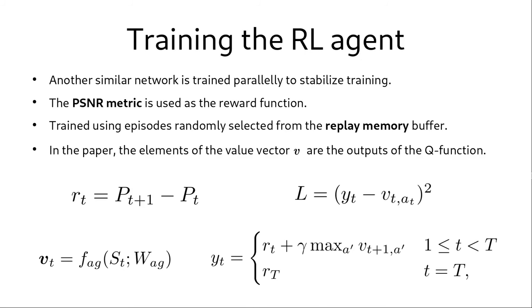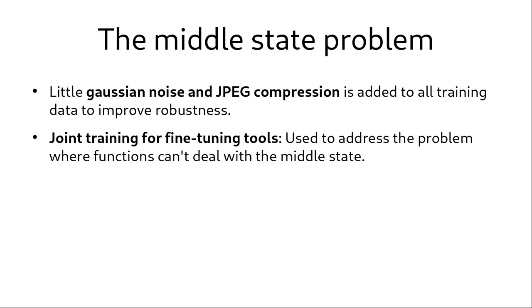Coming to the RL agent, note that we use the PSNR metric as the reward function. We train two parallel networks to stabilize training. The value functions for calculating the losses are obtained from these two networks. We also use a replay memory buffer and we train using episodes that are randomly selected from this buffer. To address the middle state problem that we have mentioned before, we come up with two solutions. We add some Gaussian noise and JPEG compression to all the training data to improve the robustness of the model. We also use joint training to fine-tune the tools after they have been trained so that they can deal with the middle state better.